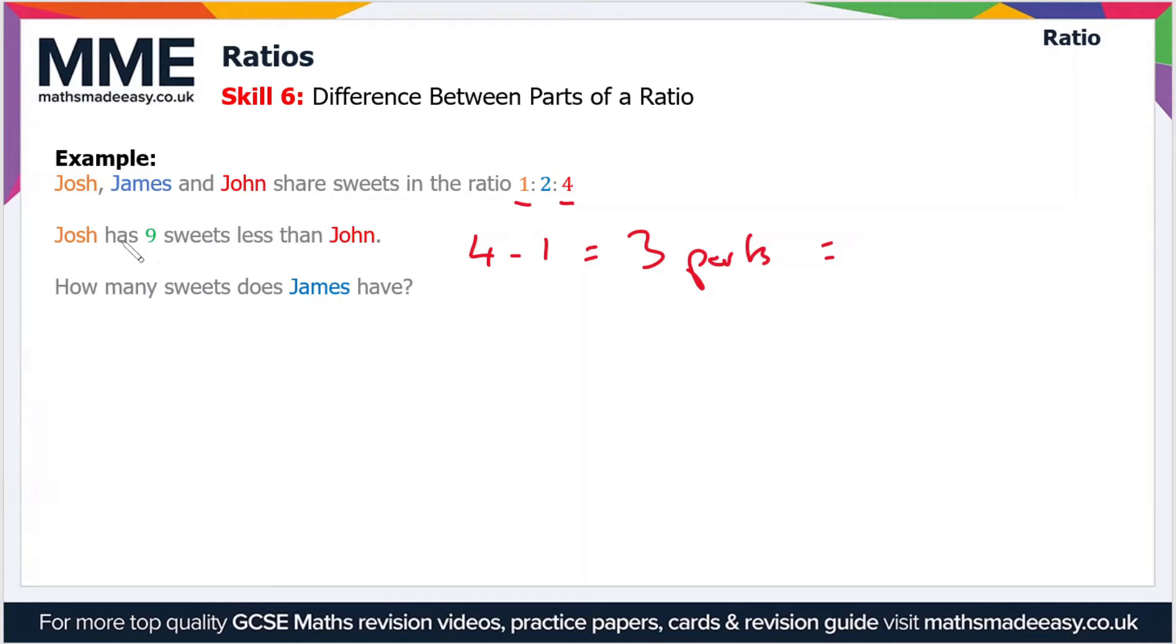Now we can work out what one part is. So one part is 9 ÷ 3, which equals 3 sweets. Now we're in a position to work out how many sweets James gets.